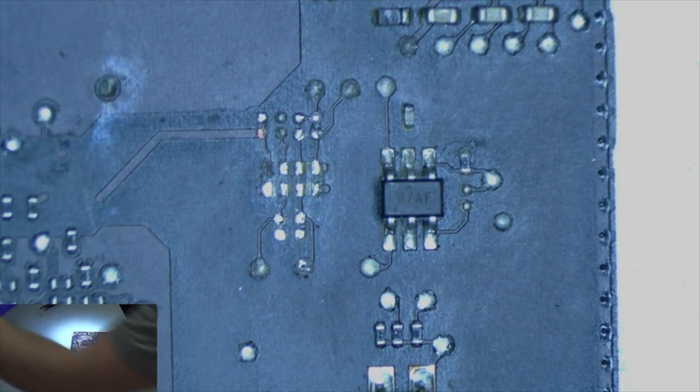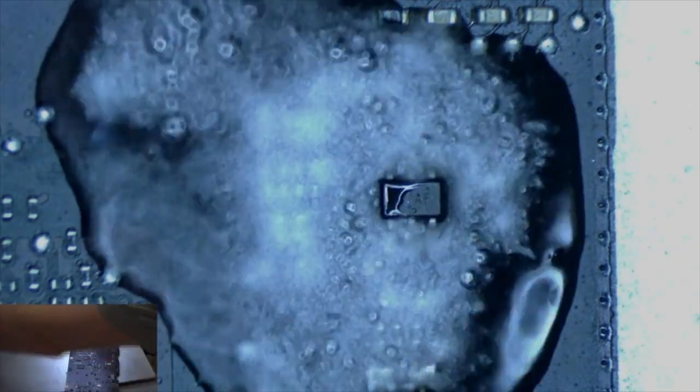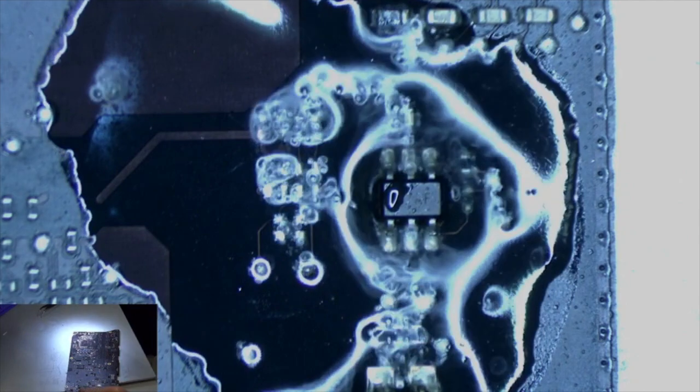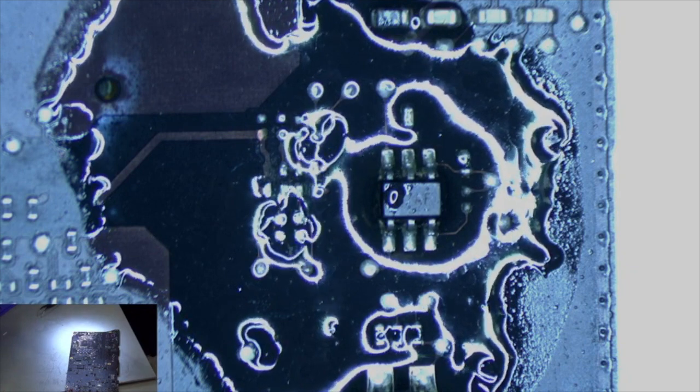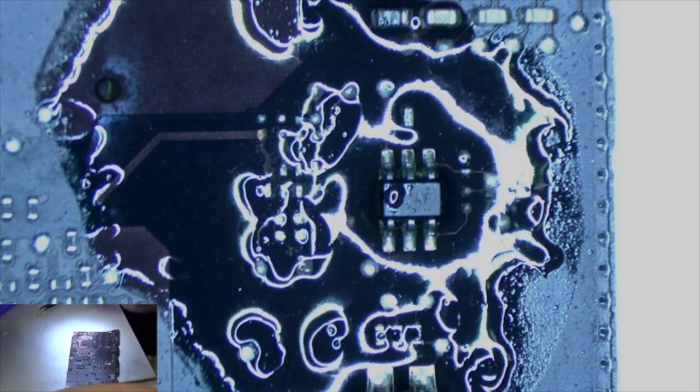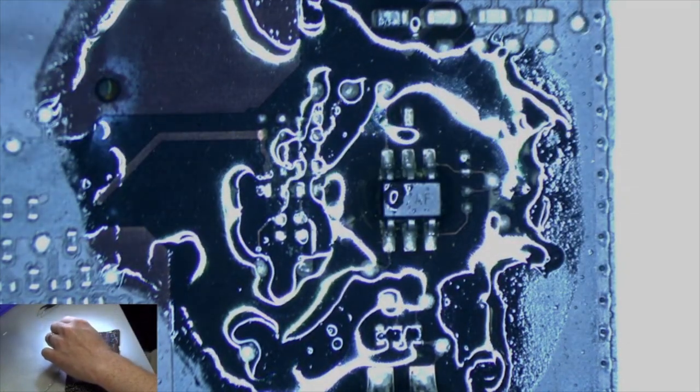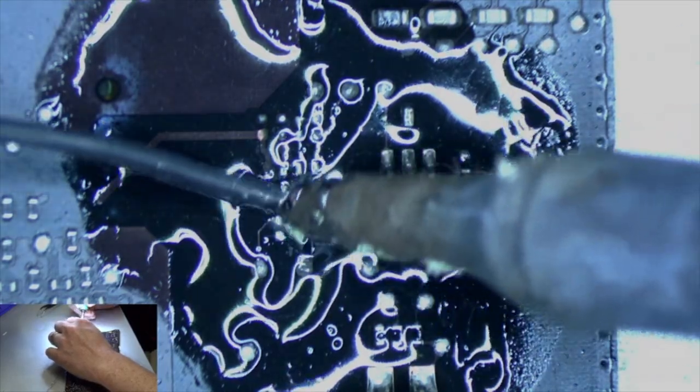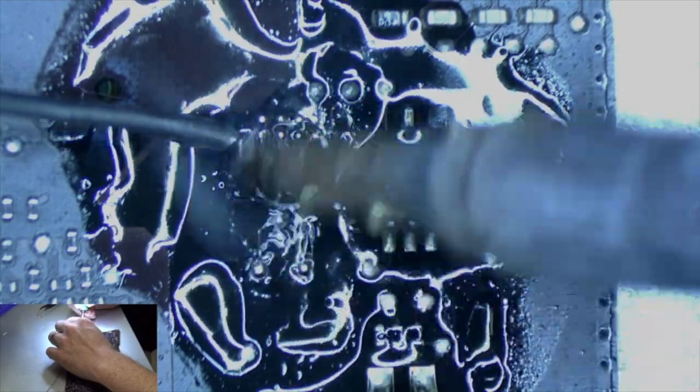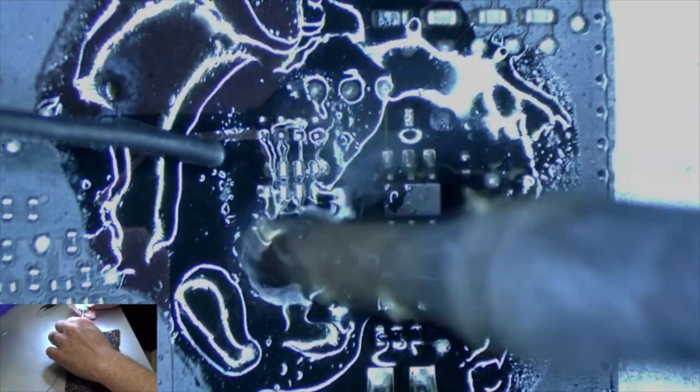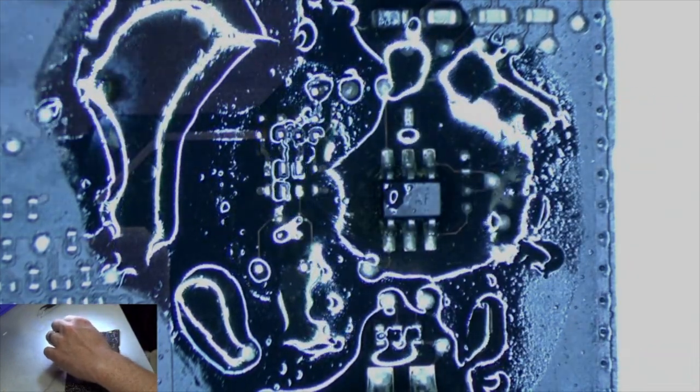Okay, so what we're going to do, we're going to use some of this liquid flux that works really good at cleaning up corrosion and getting the pads back in good shape. I'm going to turn on my filter here. We're going to add some leaded solder to those pads.